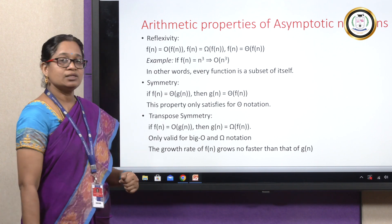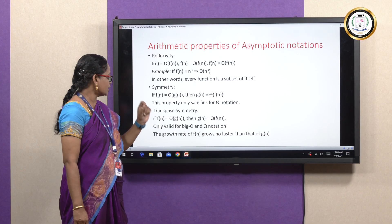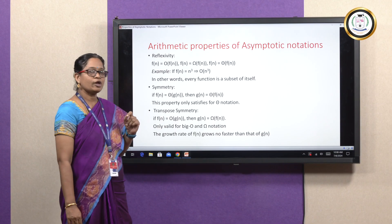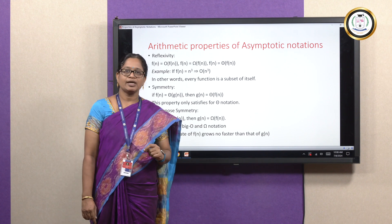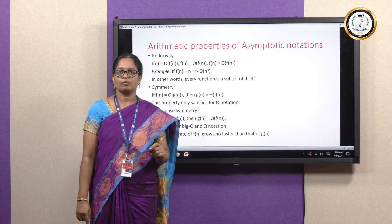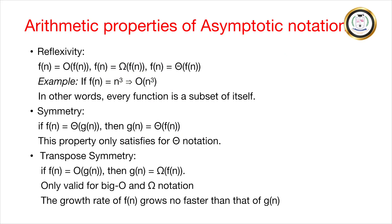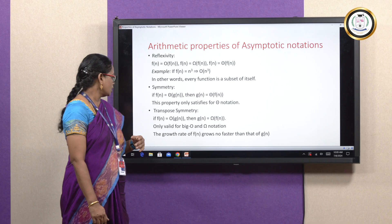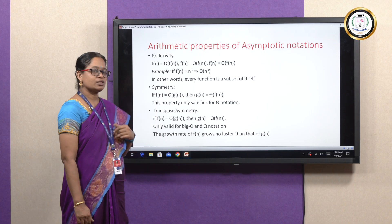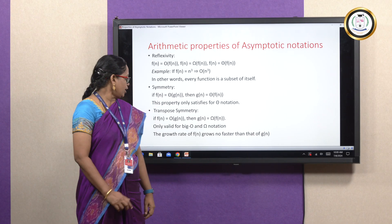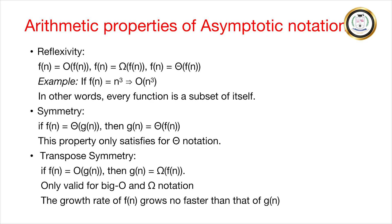The next is transpose symmetry. It is valid only for big O and omega notation — it is not applicable for theta notation. This says that the growth rate of f(n) grows no faster than that of g(n). It is defined by: if f(n) = O(g(n)), then g(n) = Ω(f(n)).